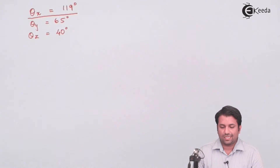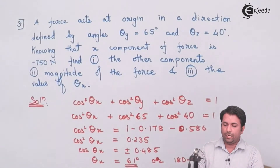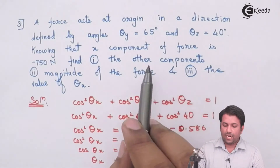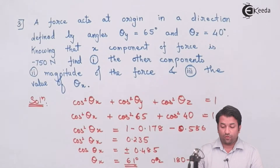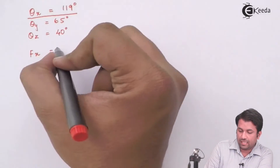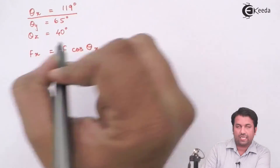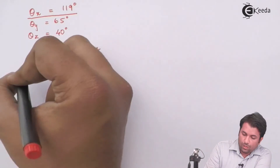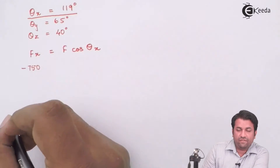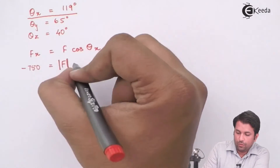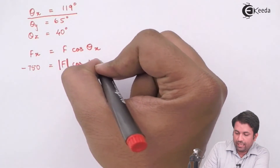The other two angles, theta_y and theta_z, are already given. We have now calculated theta_x. Next, we need to find the force magnitude. We use the relation: F_x = F·cos(theta_x). We know F_x is minus 750 newtons and the angle along x is 119 degrees. Solving this gives us the magnitude of the force.